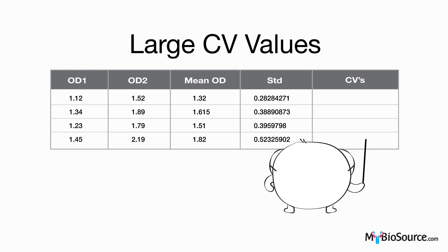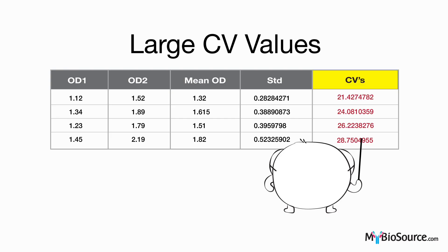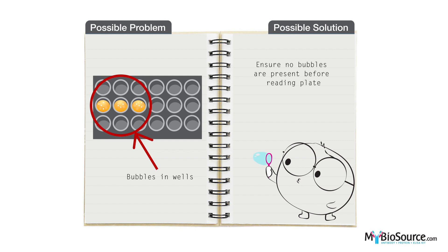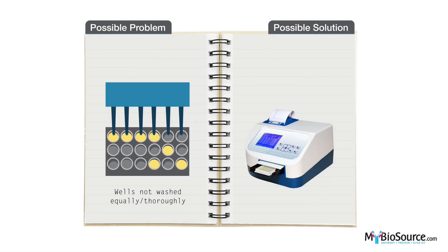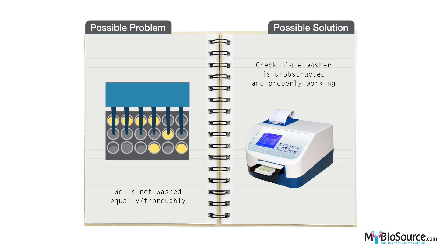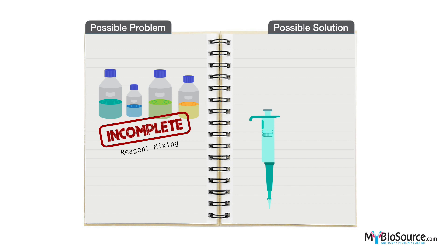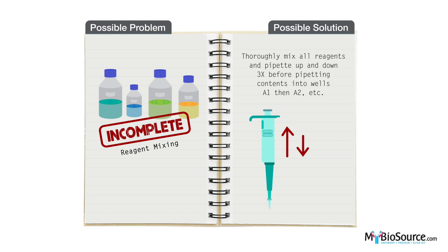Large CV values, generally considered to be above 20% for our assays, may be due to the following: acquiring bubbles in the wells during the assay. Please ensure no bubbles are present in the wells before reading your plate. Also, wells that are not evenly washed may lead to high variation between wells. If using a plate washer, please check to confirm it is working properly and that pipette tips are not obstructed.